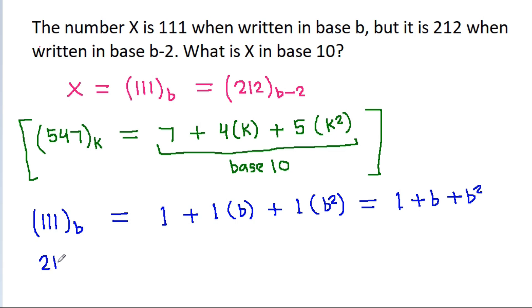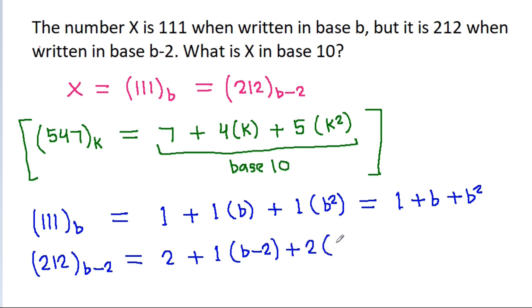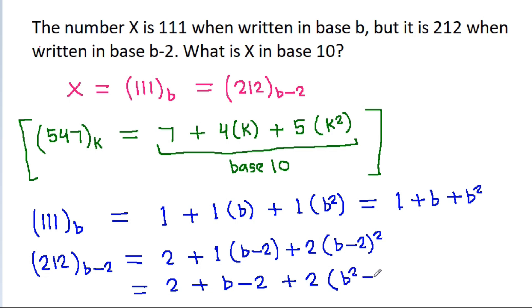And 212 in base b-2 will be equal to 2 plus 1 times (b-2) plus 2 times (b-2) squared. Expanding, 2 times (b-2) squared gives 2b squared minus 8b plus 8.